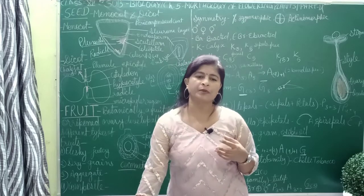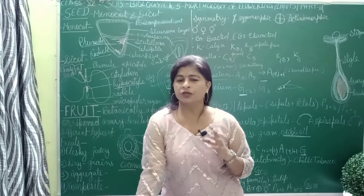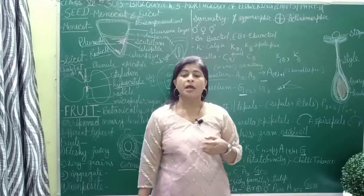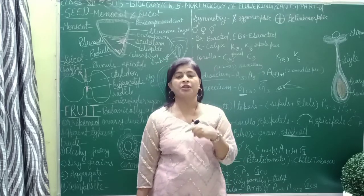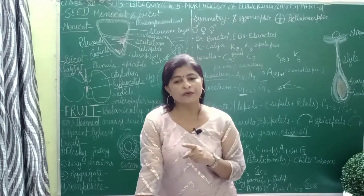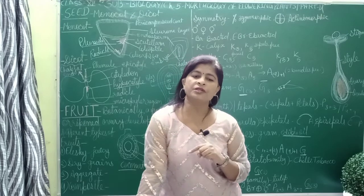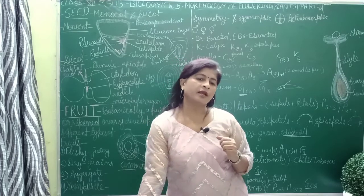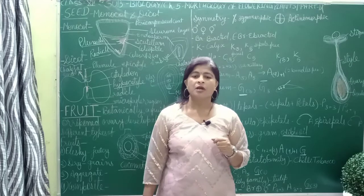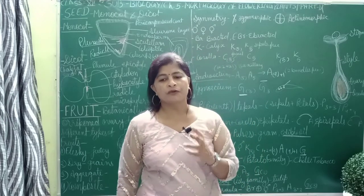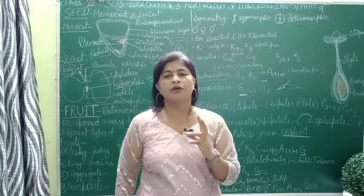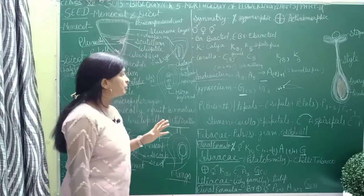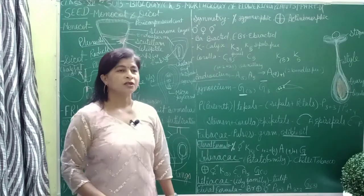The ovary completely converts into a fruit. The ripened ovary is called a fruit. Fruits that develop only from the ovary and convert into fruit are called true fruits. Fruits that develop from parts other than the ovary are called false fruits. Another term is parthenocarpy, which means formation of fruits without fertilization — for example, banana.